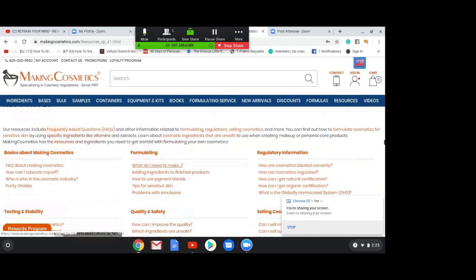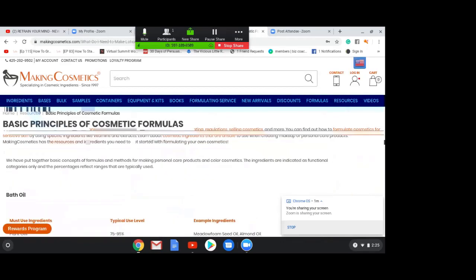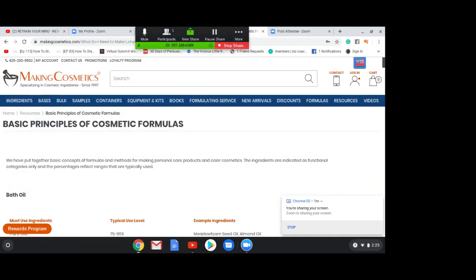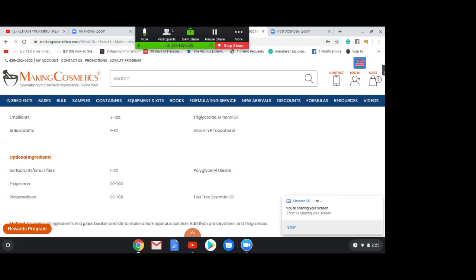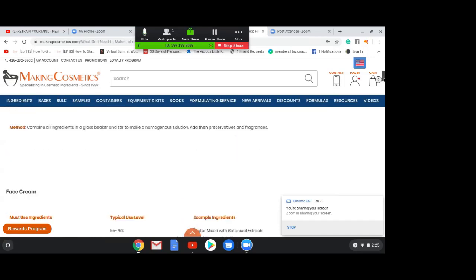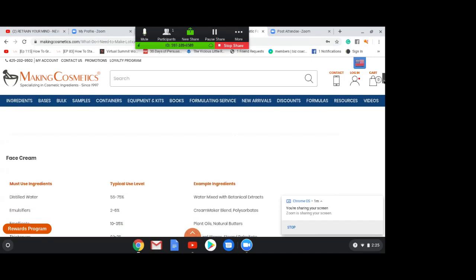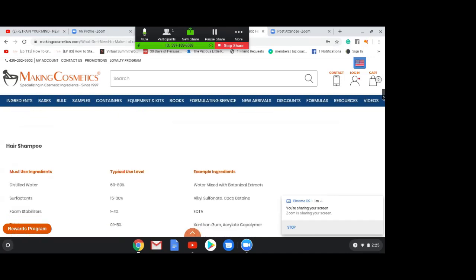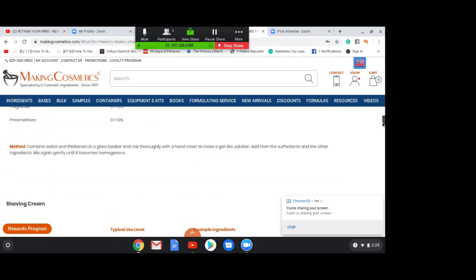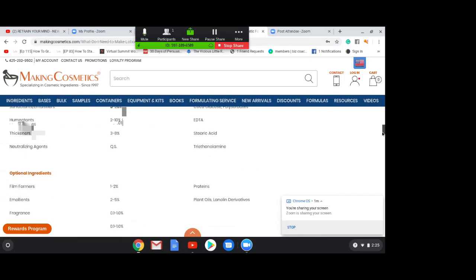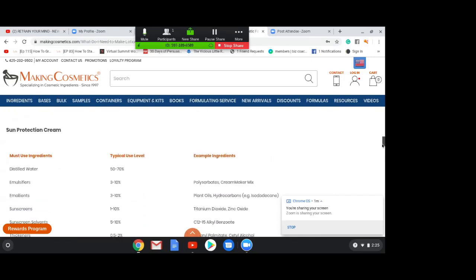So let's go over to the formulating and what I want to click on next is this tab here that says What Do I Need to Make. When I click on that I'm going to see a whole bunch of formulation types or product types. Let me just scroll down quickly to explain what I mean: bath oil, face cream, hair shampoo, conditioner, shaving cream, sun protection cream, all of the things.